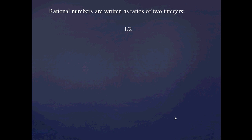First, let's remind ourselves of what a rational number is. A rational number is written as a ratio of two integers — that's why it's called a rational number. We have rational numbers like 1 over 2, but the representation isn't unique: we can also write 1 over 2 as 2 over 4, or 10 over 20. This is similar to representing an integer like negative 2 as 2 minus 4, or 3 minus 5.